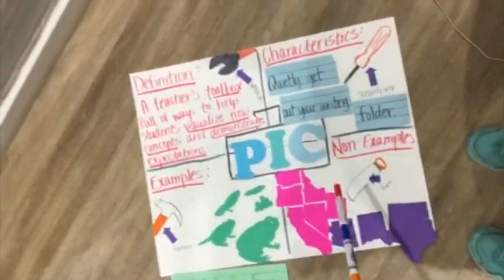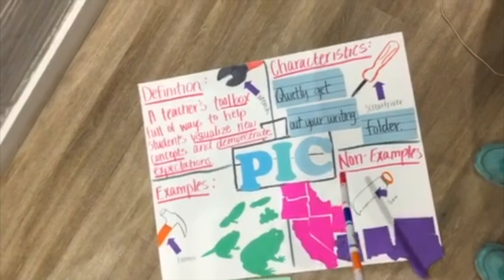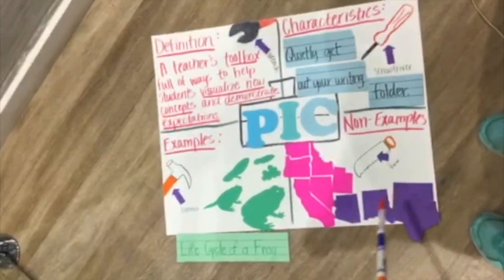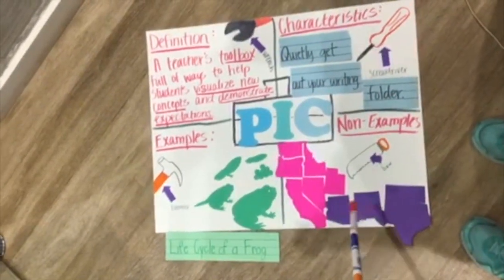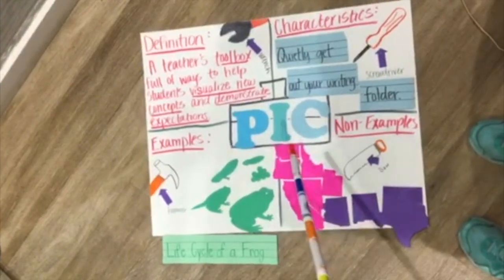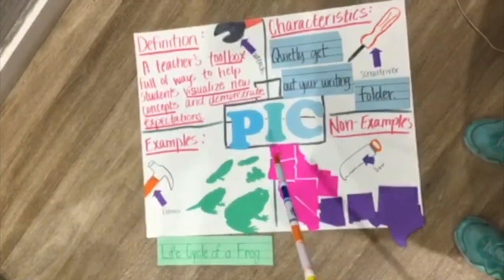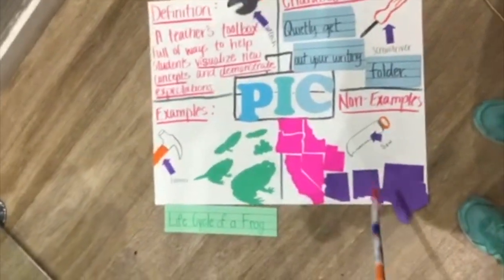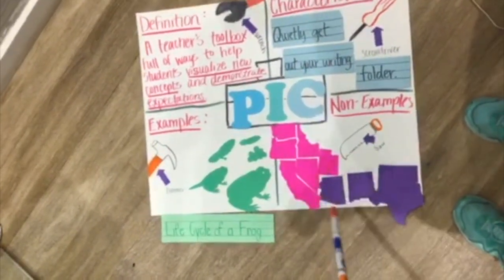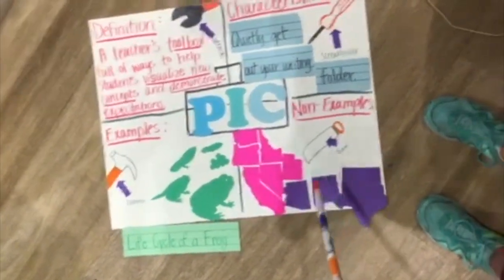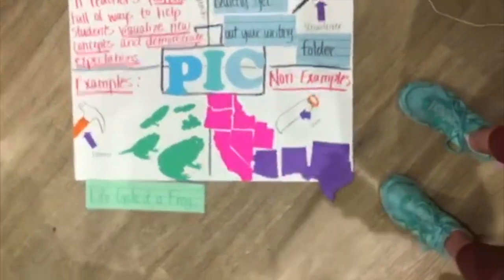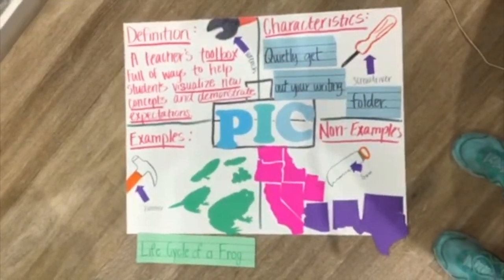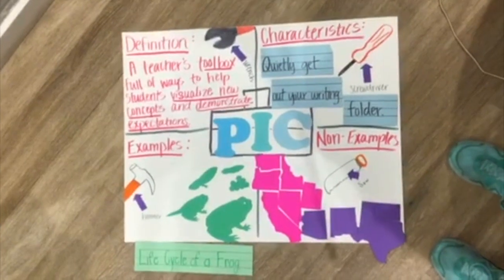Some non-examples of presenting instructional content would be: if you were doing a unit on the southern United States, you would not include random information about Seattle or Los Angeles, because that has nothing to do with the southern United States. That ensures you are only using essential information and only talking about what you're supposed to talk about.